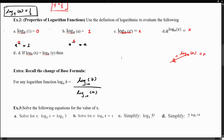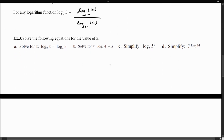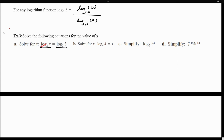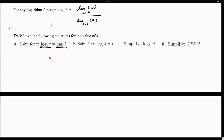Now that we've discussed the four properties, let's put them into use by solving for x. In example a, on the left we have log base 2 of x, and on the right we have log base 2 of 3. Notice both have the same base — base 2. When logarithms share the same base, they cancel out. So the logs go away, leaving x on the left and 3 on the right. Therefore, x = 3.